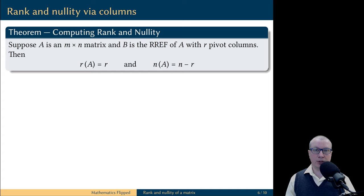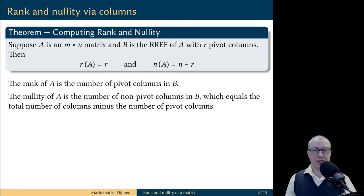The first equality is clear because we just showed that the rank of the matrix is equal to the number of pivot columns in the reduced row echelon form. And the second equality follows from our observation that the nullity of the matrix is equal to the number of non-pivot columns in the reduced row echelon form.